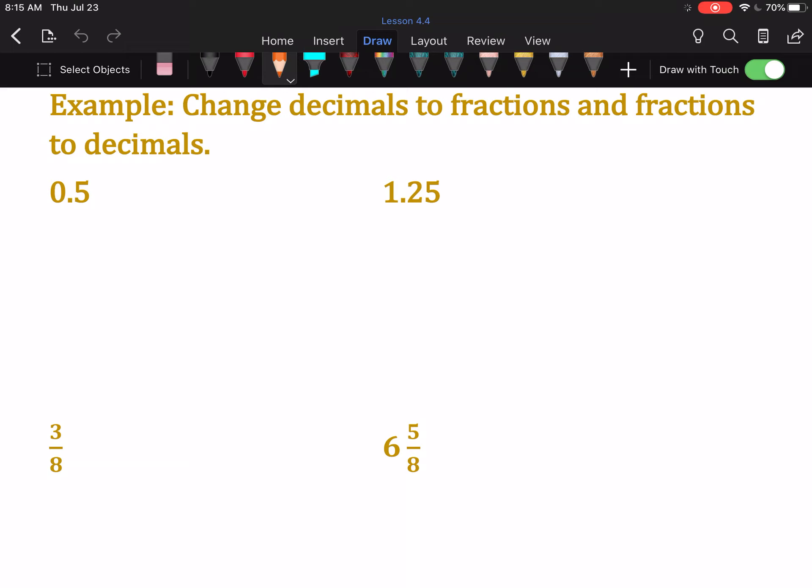So, 0.5. If we say that number properly, it is five-tenths, because the first decimal place is tenths.